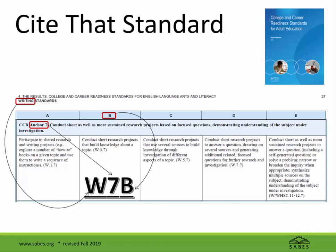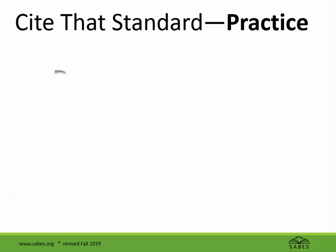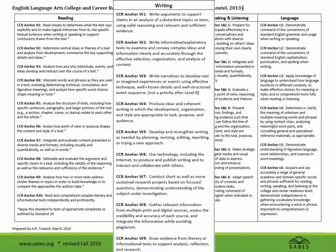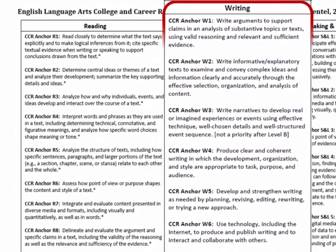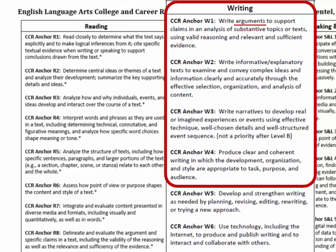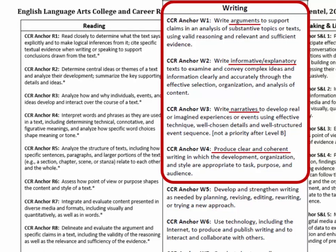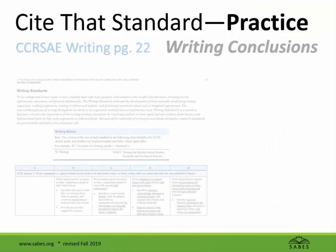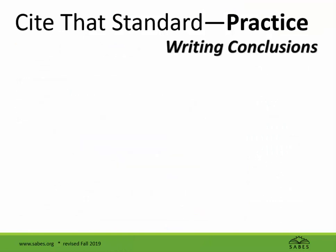It's time to practice. Let's say that you teach level D and you want to work with your students on writing conclusions. How might you find and then notate the relevant standard? First, pull out that handy chart of anchor standards and zoom in on the writing anchors. It seems most likely that writing conclusions will be somewhere in the first four standards, which are about writing arguments, writing informative and explanatory texts, writing narratives, and producing clear and coherent writing. Next, look in the CCRSAE for more detail. The writing standards start on page 22, but it turns out that conclusions are in two different anchor standards — 1 and 2.